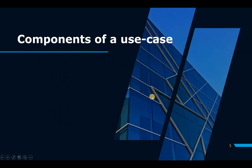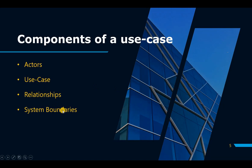A use case diagram has four main components: actors, use cases, relationships, and system boundaries. We will look at each one of them in detail and I will also demonstrate them in the practical example so you have a much better idea towards the end of this video.